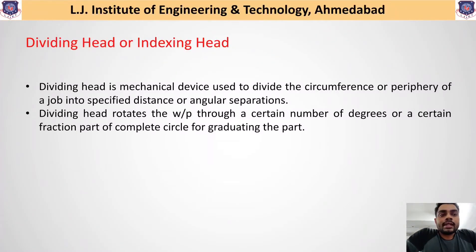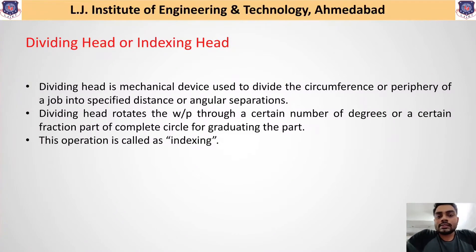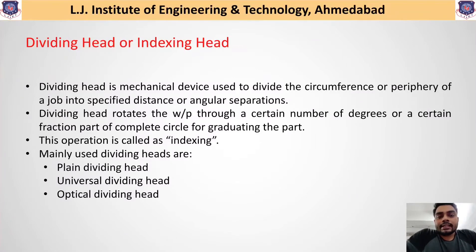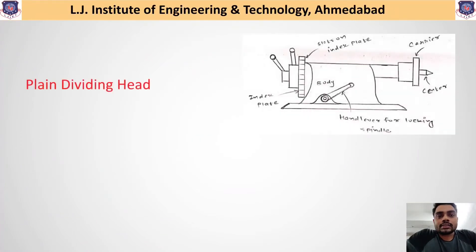This process of dividing the circumference or periphery of a job into a specified distance or angular separation is called indexing. For this indexing operation, different types of dividing heads are available: the plain dividing head, the universal dividing head, and the optical dividing head. We will discuss these different types in detail in our next slides, starting with the plain dividing head.